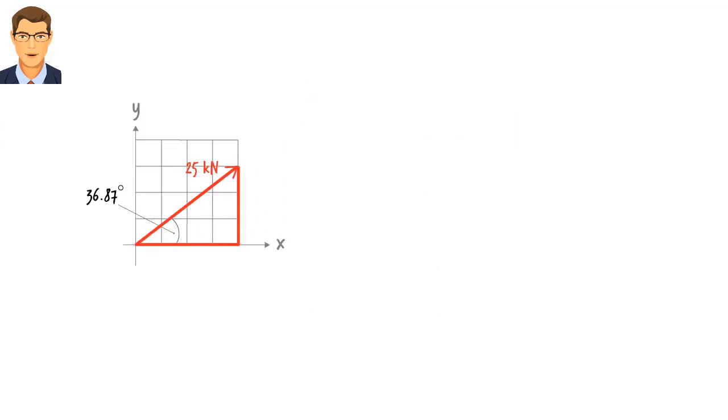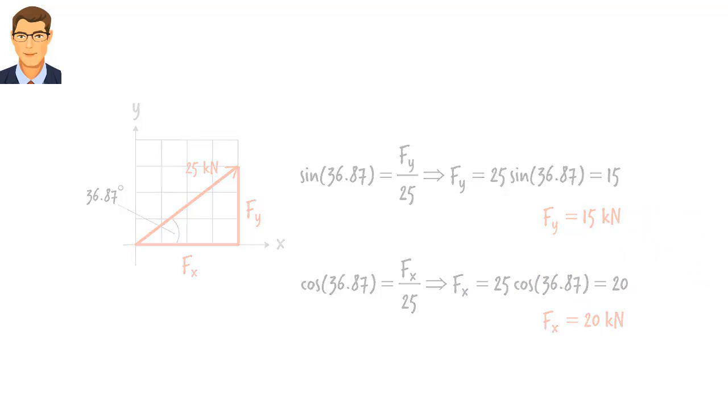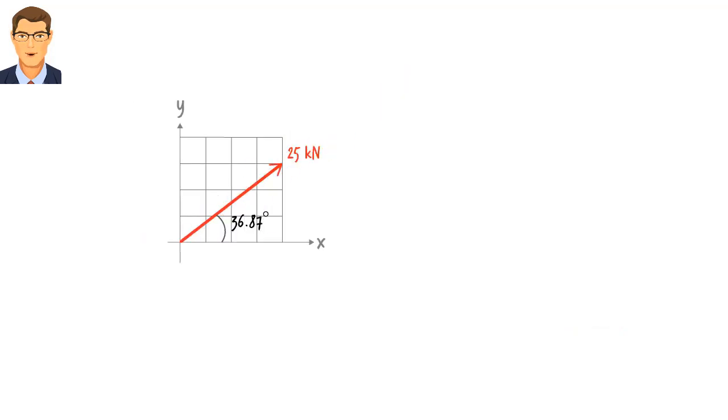Given that this is always a right triangle, and we know its interior angles, then we can use trigonometry to figure out the side lengths. That is, knowing the magnitude and orientation of a force vector, we can easily determine its x and y components. Let's refer to this unknown length as fx and call this length fy. Then we can write sine of 36.87 equals fy over 25, and cosine of 36.87 equals fx over 25. This gives us 15 kN for fy and 20 kN for fx. So we can replace this vector with these component vectors and vice versa.